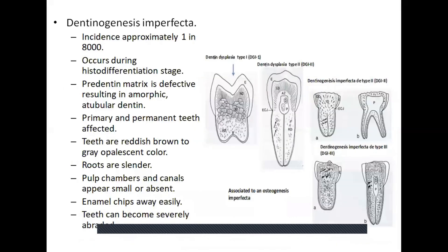Dentinogenesis imperfecta has an incidence of approximately 1 in 8,000. It occurs during the histodifferentiation stage. The predentine matrix is defective, resulting in atypical dentine formation. Both primary and permanent teeth are affected. Teeth become reddish-brown or gray opalescent. The roots are slender, pulp chambers and canals appear small, enamel chips away very easily, and teeth can become severely abraded. Treatment may include full coverage crowns or bonded veneers on anterior teeth.